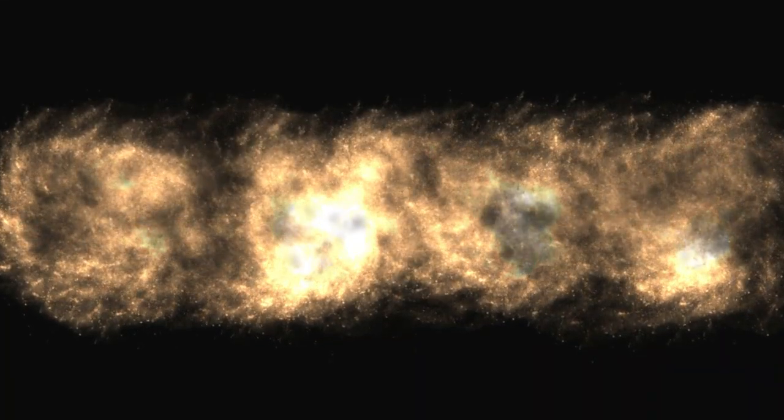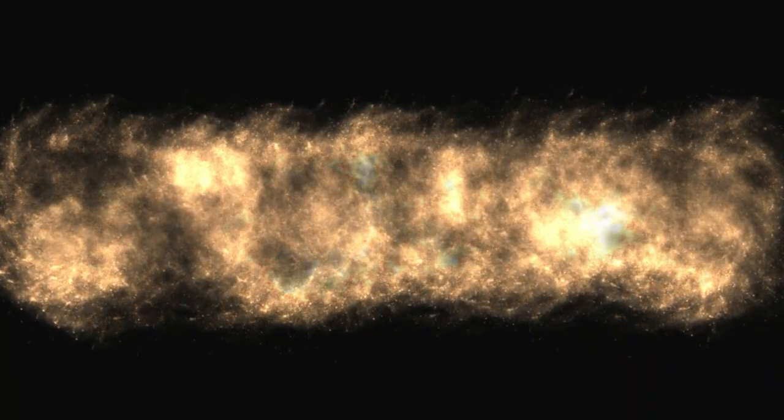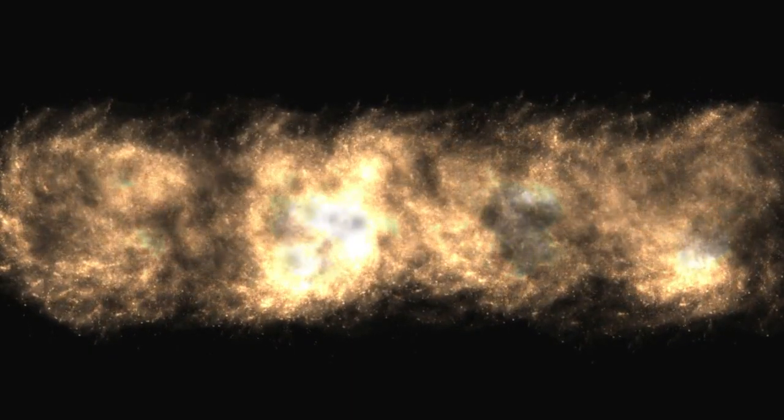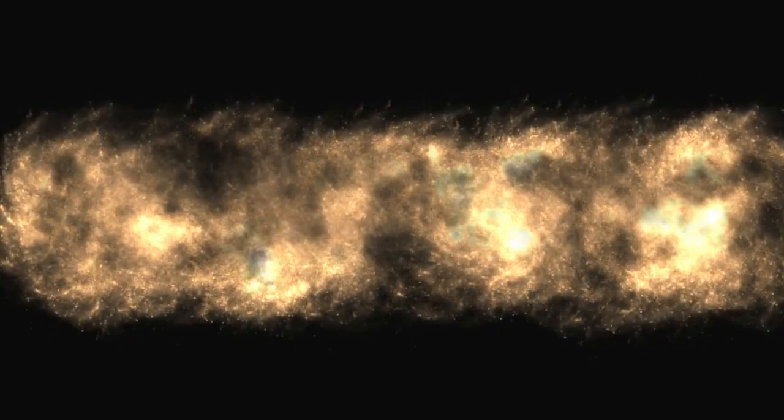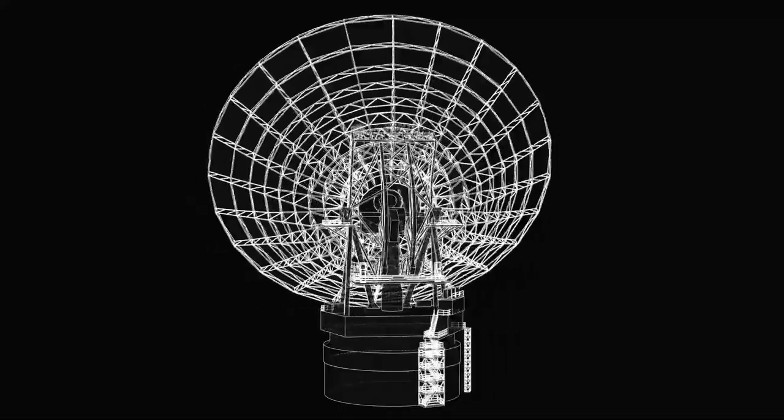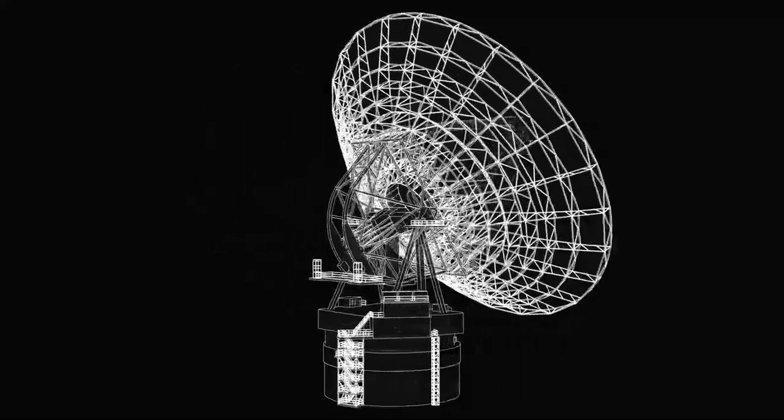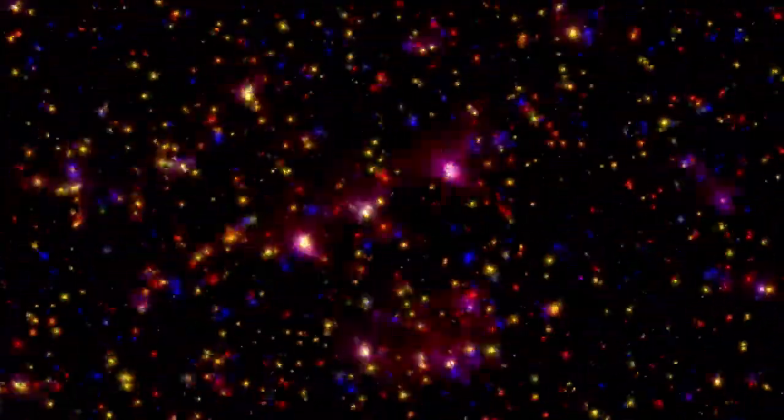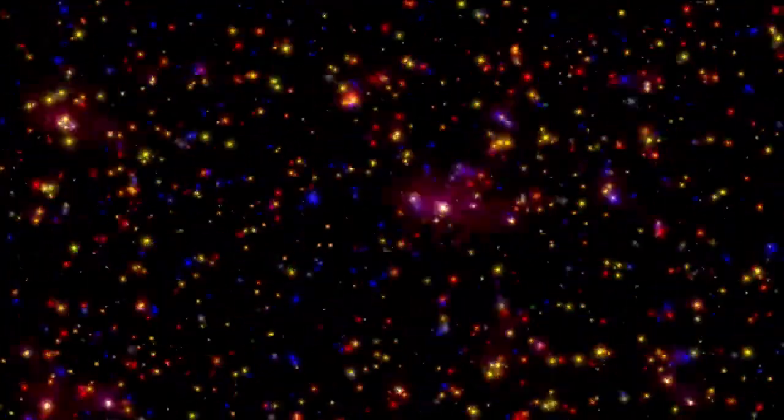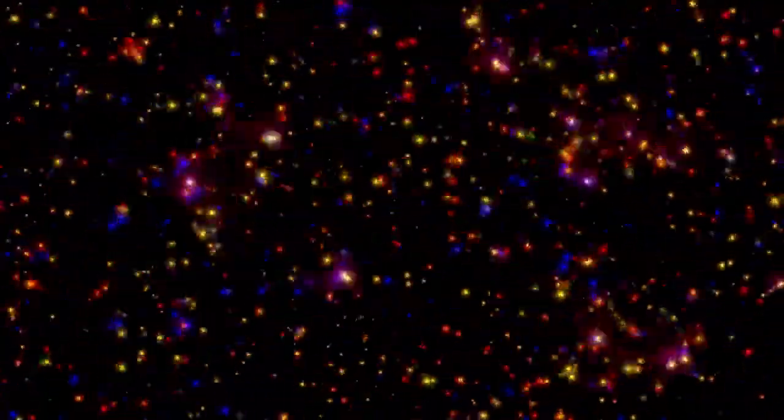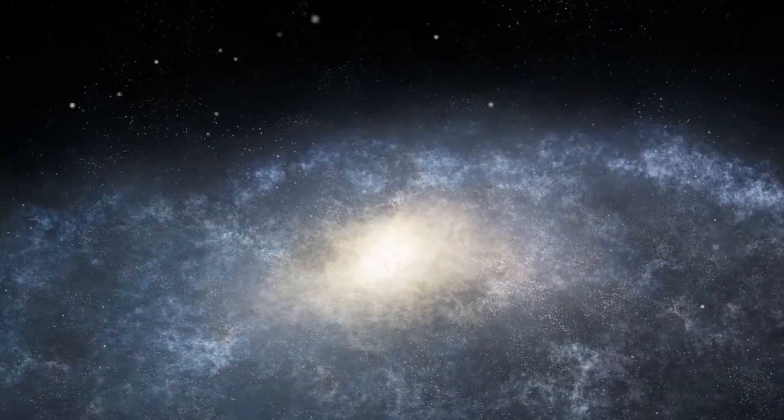While the scientific community marvelled at the Jupiter images, Webb quietly provided another stunning photo, the Southern Ring Nebula, or NGC 3132. This was initially a standard target for color calibration and structural analysis, a well-studied nebula formed by a dying star shedding its outer layers, creating a glowing shell of gas and dust.